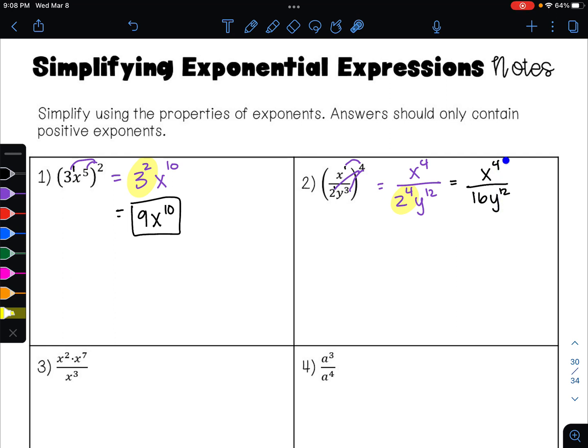Now I can't subtract these exponents because my bases are different. This is an x and this is a y. They're not the same letter. So there's nothing else I can do on this one. So my answer is x to the 4th divided by 16y to the 12th.